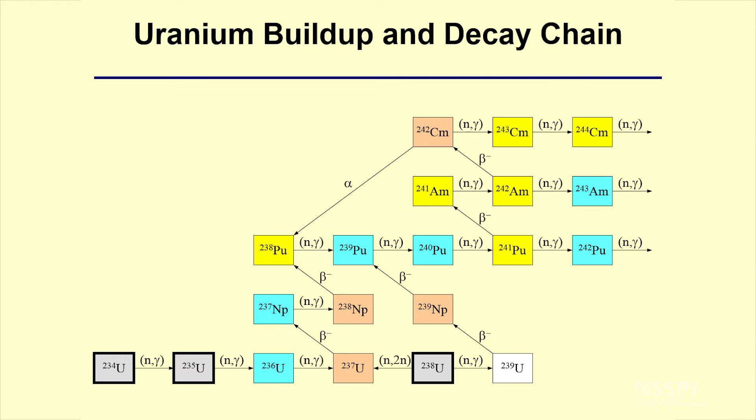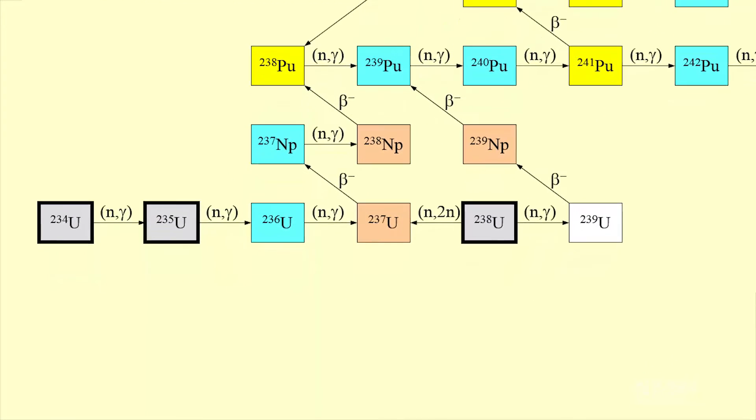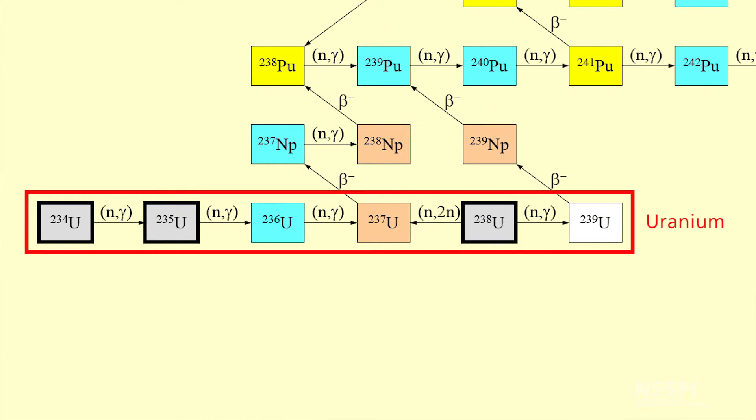This particular picture, which is a fairly complicated picture, shows the basic buildup and decay chain you would expect to see for uranium. What is displayed here is a set of boxes that shows each of the individual isotopes that would exist for an element. For instance, for the element uranium, you could have U-234, U-235, U-236, U-237, U-238, or U-239.